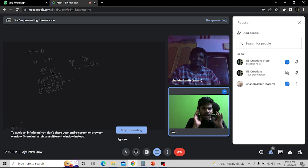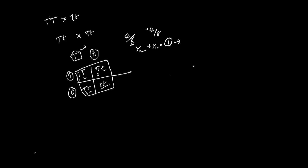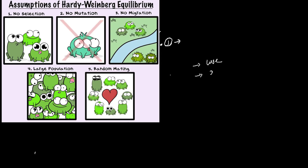We'll discuss a little bit about that Hardy-Weinberg framework. For it to apply, you need a large population size, random mating, no gene mutation or migration, and no natural selection. We have to have no evolutionary force acting on the population.